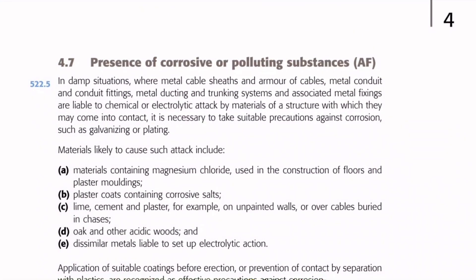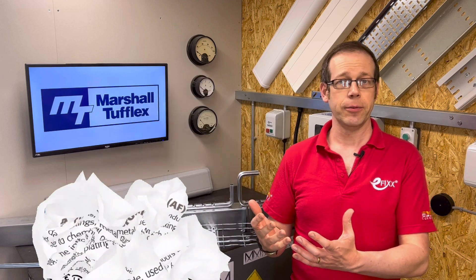One of the downsides to steel containment is that it is highly susceptible to corrosion from atmospheric moisture. For this reason we find this direction in Guidance Note 1 under subheading 4.7, 'Presence of corrosive or polluting substances — AF.' In damp situations where metal cable sheaths and armour of cables, metal conduit and conduit fittings, metal ducting and trunking systems and associated metal fixings are liable to chemical or electrolytic attack, it is necessary to take suitable precautions against corrosion such as galvanising or plating. Although there are different finishes of steel conduit available, it's pretty rare for steel trunking and tray to be anything but galvanised nowadays.